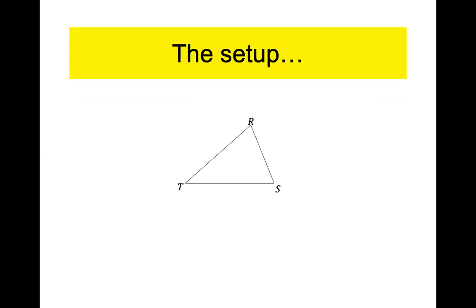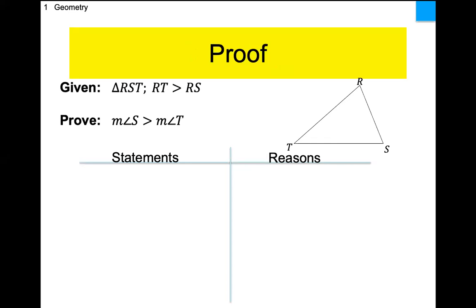The entire day we're just talking about a generic triangle TRS — I'm not saying anything about whether it's isosceles, right, acute, or obtuse. We're going to jump right in and do a proof. I'm trying to prove that if one side of a triangle is bigger than another side, then the angle opposite the larger side is bigger than the angle opposite the smaller side. So if RT is bigger than RS, then angle S should be bigger than angle T.